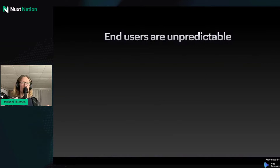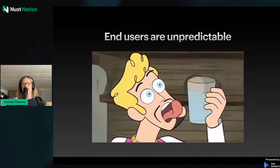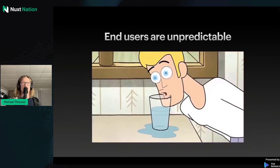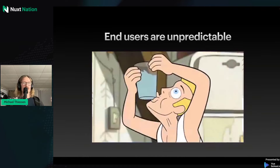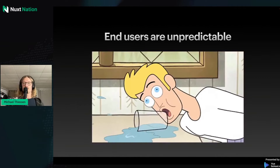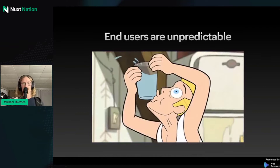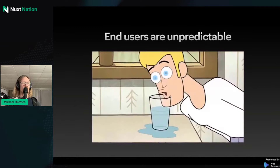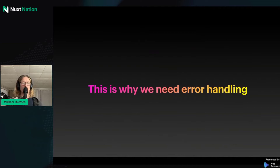The reason we want to handle errors in our application is that end users are unpredictable. We may think our application is obvious in how it should be used, but users do all sorts of unexpected things. The world is unpredictable, and once your app is in production, requests won't always work. We need error handling so our app doesn't fall over when something unexpected occurs — and something unexpected will happen.